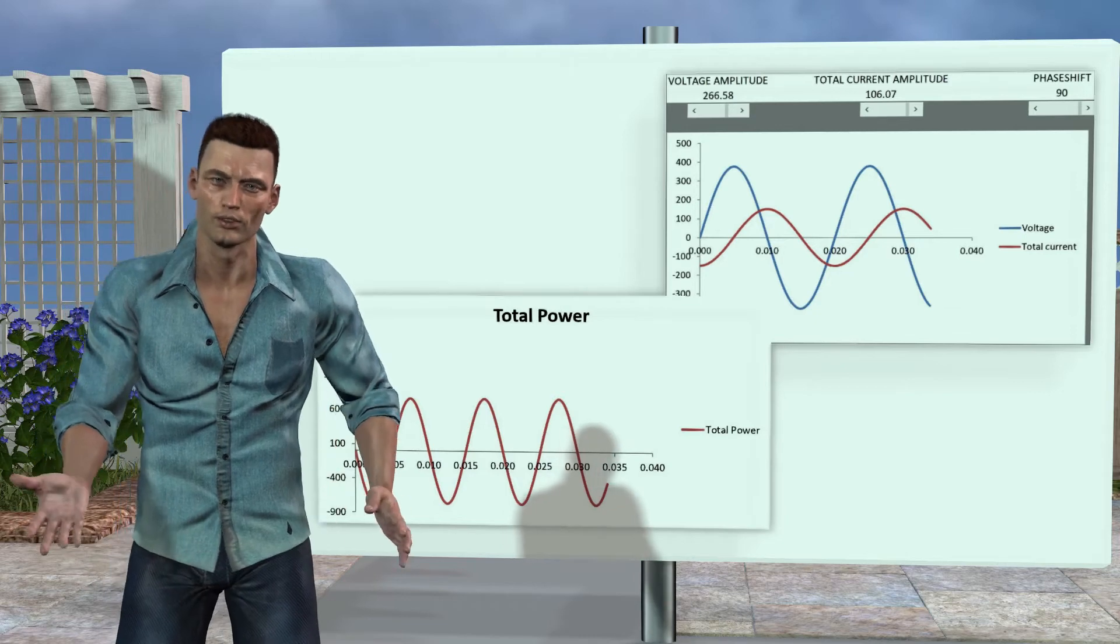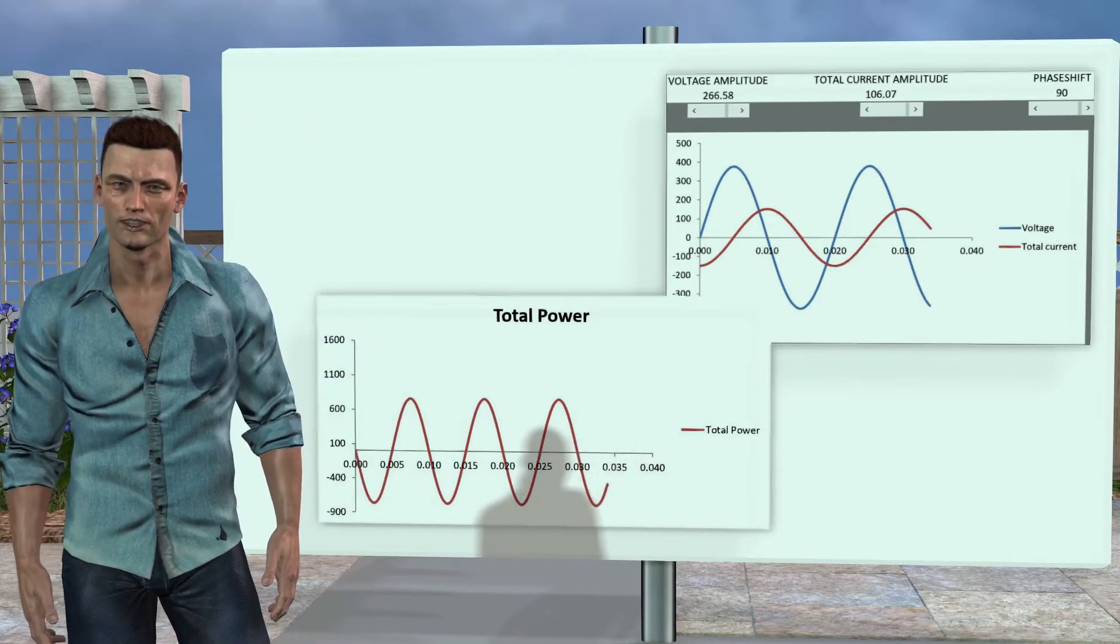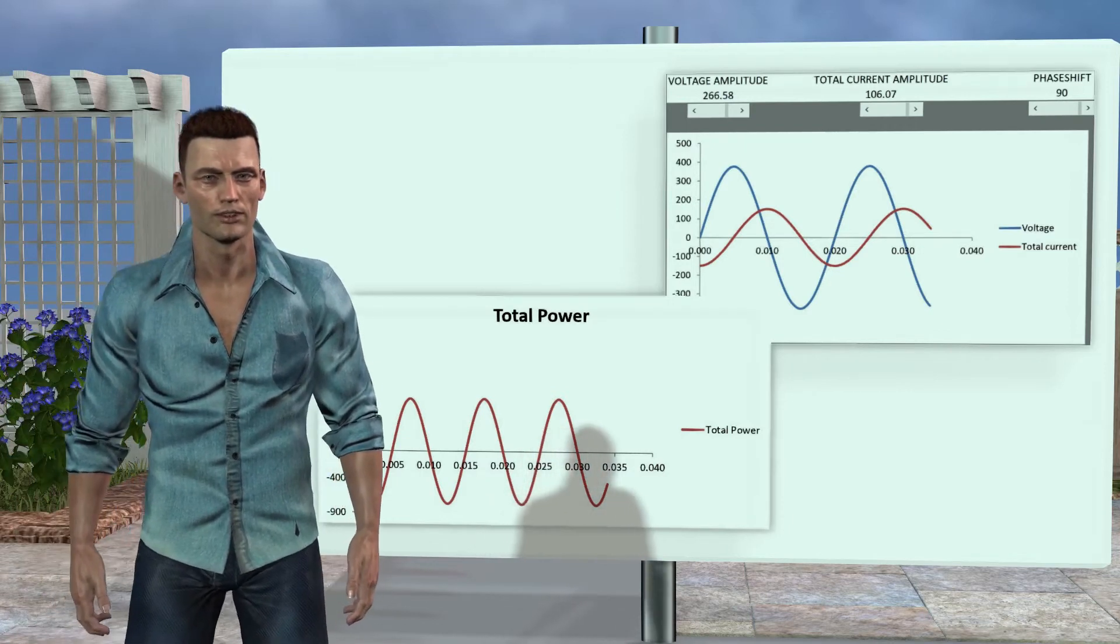If we now consider an ideal coil as a load, that is, a load with a phase shift of 90 degrees, now there are moments when the voltage and the current have opposite signs, which gives rise to a negative power.